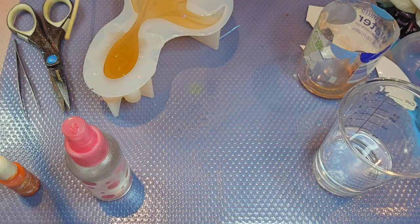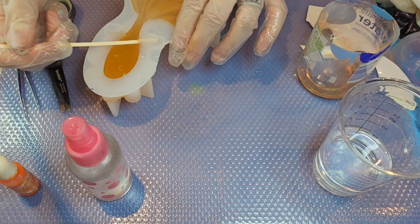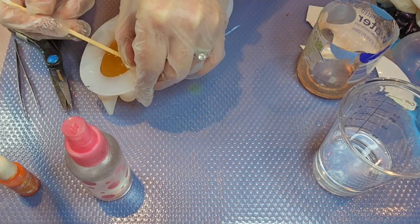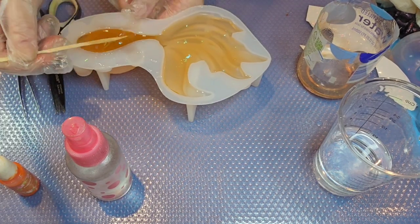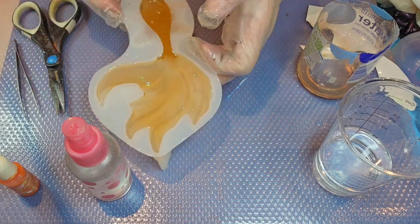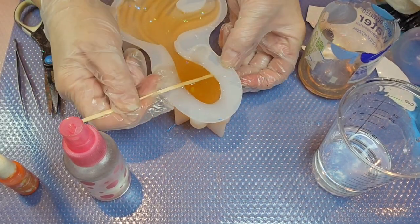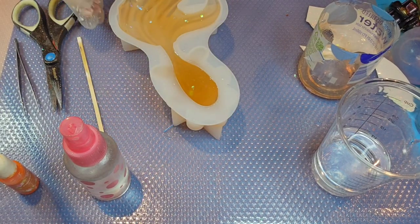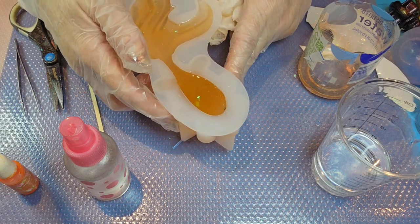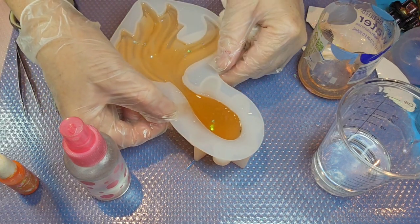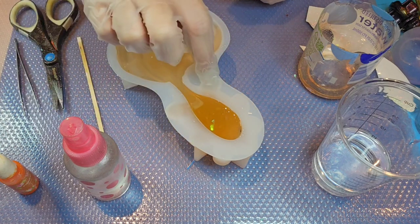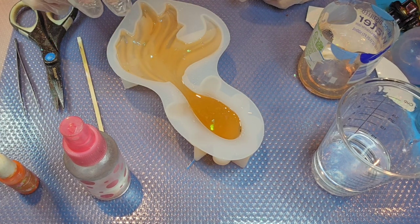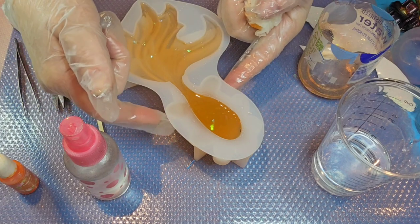So now I see I've got bubbles in these fins. Okay, so it looks like I went ahead and I squeezed the sides here and I can see the bubbles through the translucent part of the mold. And so I was able to squeeze those out on these two.